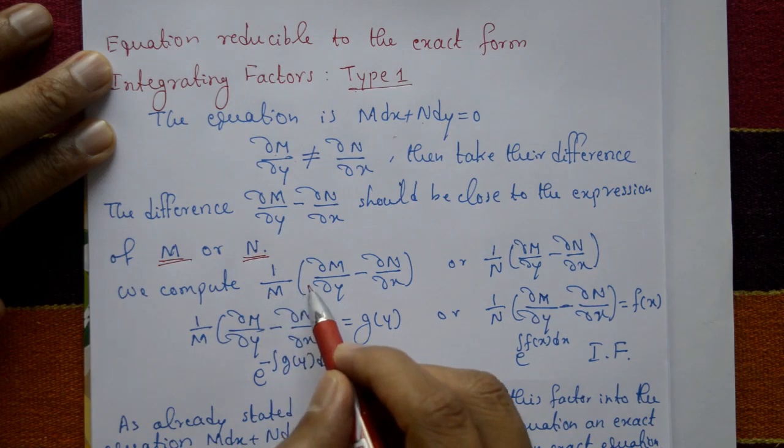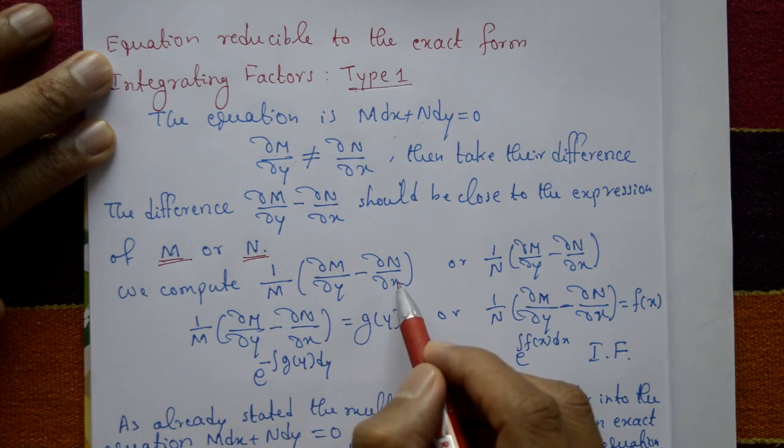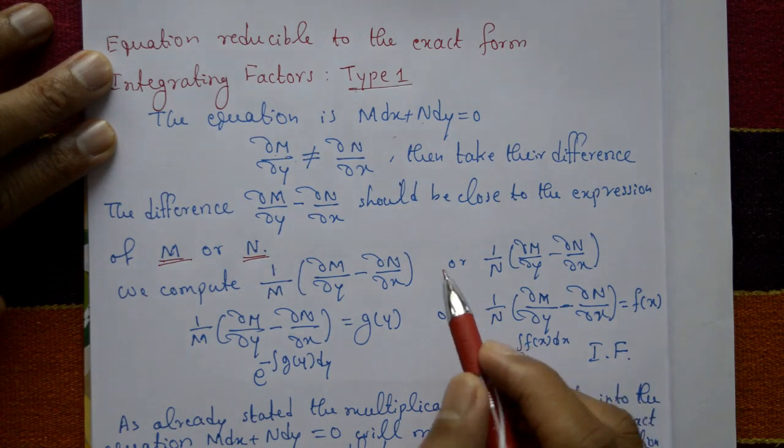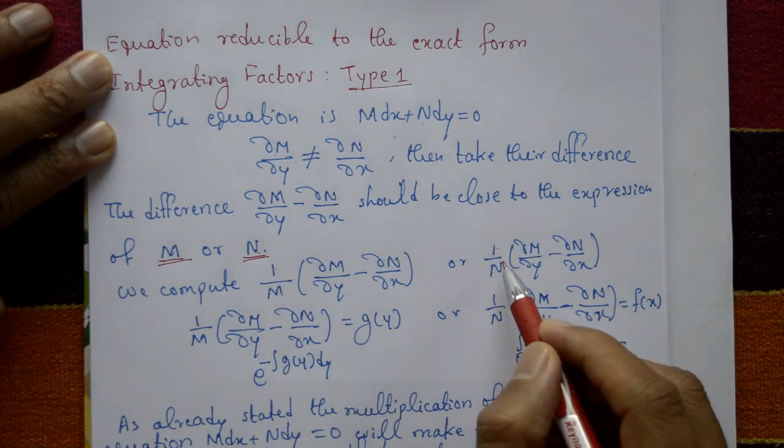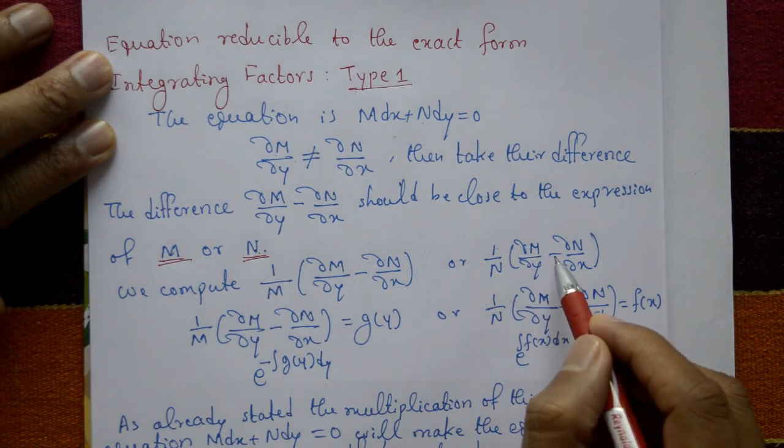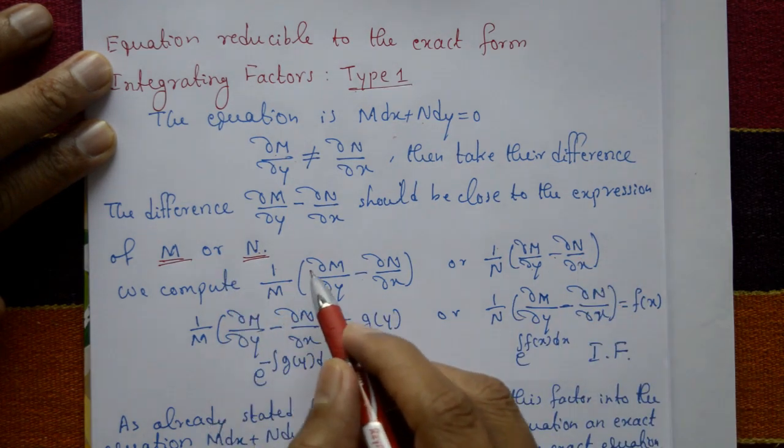We compute, or if close to N, take 1/N into (∂M/∂y minus ∂N/∂x) like this. Now if close to M, this part is g(y).